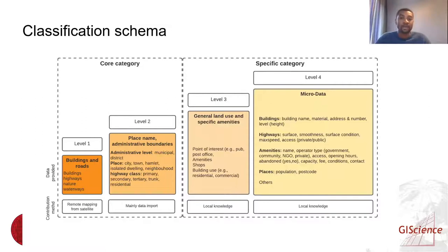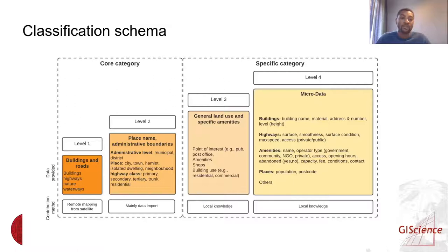The specific category covers those that require more local knowledge and differ across regions. The classification schema runs from level one to level four. Level one is data that could be mapped remotely; level two covers mainly imported data; level three covers general land use and specific amenities; and level four adds more micro data, for example building name, building material, and building heights.